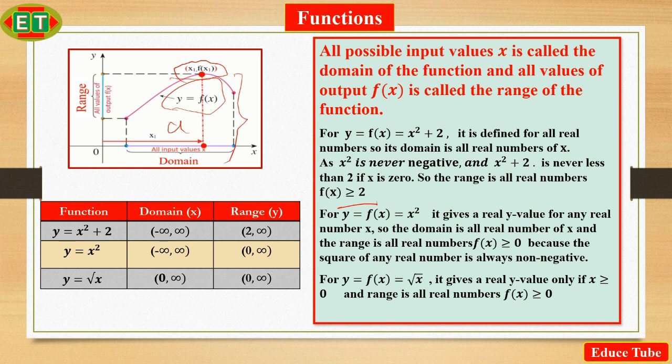So the range is all real number and it is f(x) ≥ 2. The formula y = x² gives a real y value for any real number x. So the domain is (-∞, +∞). The range of y = x² is [0, +∞). Because the square of any real number is non-negative and every non-negative number y is the square of its own square root.